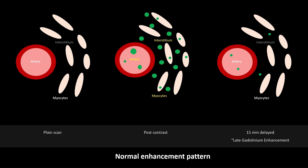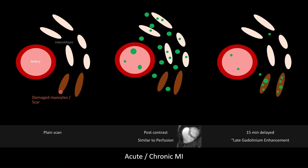Looking at the normal enhancement pattern: on the plain scan we have intravascular, interstitial, and intracellular compartments. After contrast, everything enhances — this is your perfusion image. On late gadolinium imaging, normal myocardium washes out contrast so there is no enhancement. With damaged myocardium, immediately after contrast everything enhances except the damaged part — this is the non-enhancing area on perfusion. Then that same damaged part retains contrast and appears as enhancement on LGE.